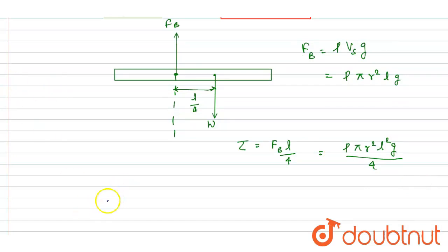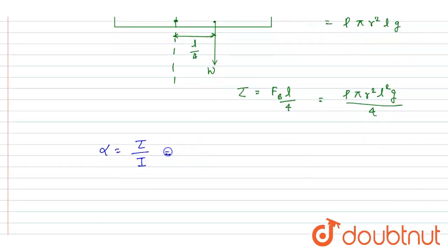Now you can get alpha. So I'll write alpha equals this. You can put the value of tau here.